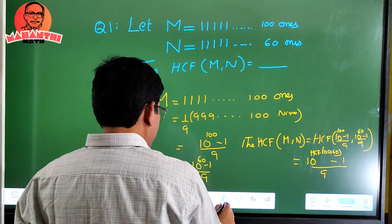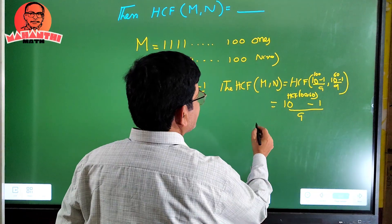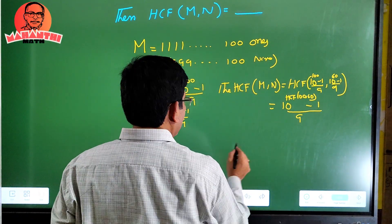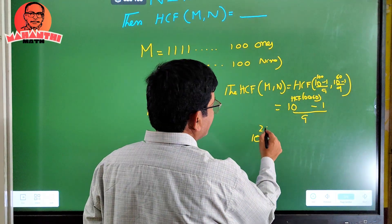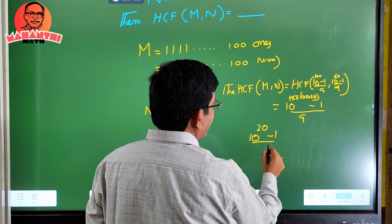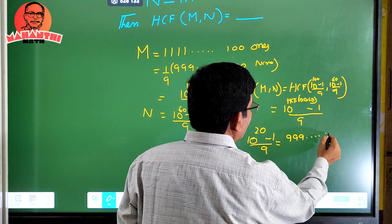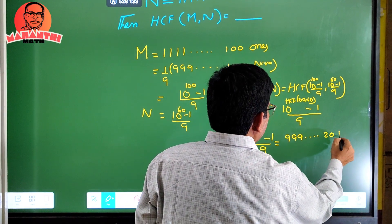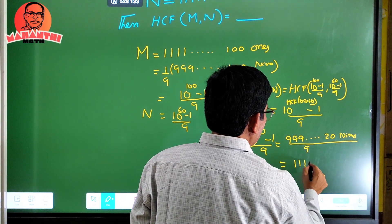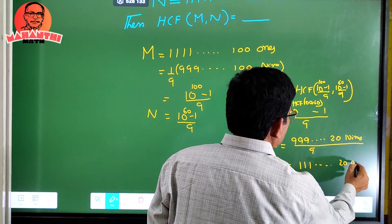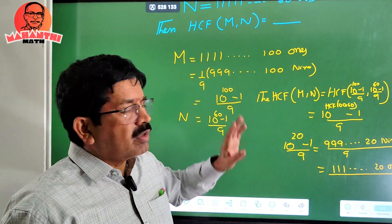This simplifies to (10^20 - 1) / 9, since HCF of 100 and 60 is 20. That is (999...9 with 20 nines) divided by 9, which equals 111...1 with 20 ones. So the HCF of the two numbers is 20 ones.